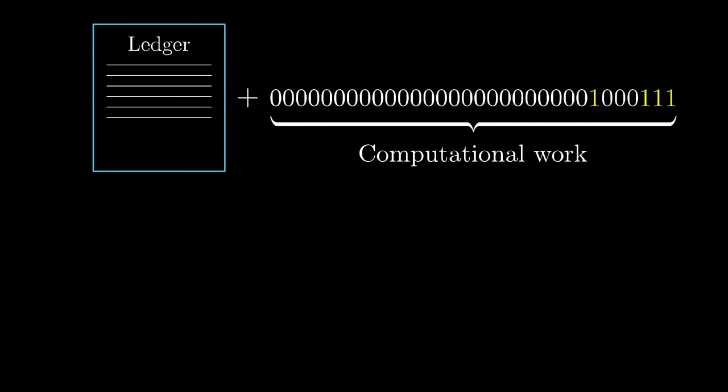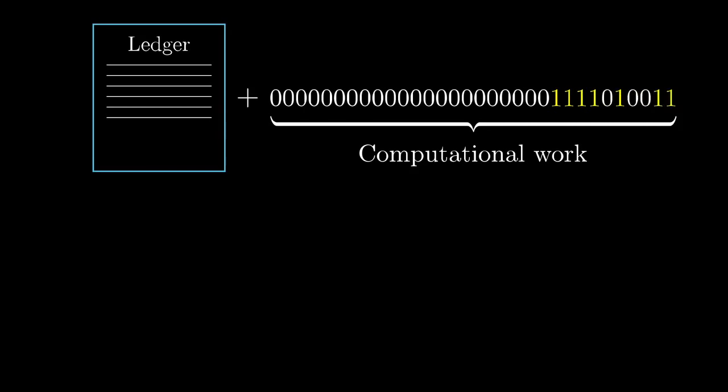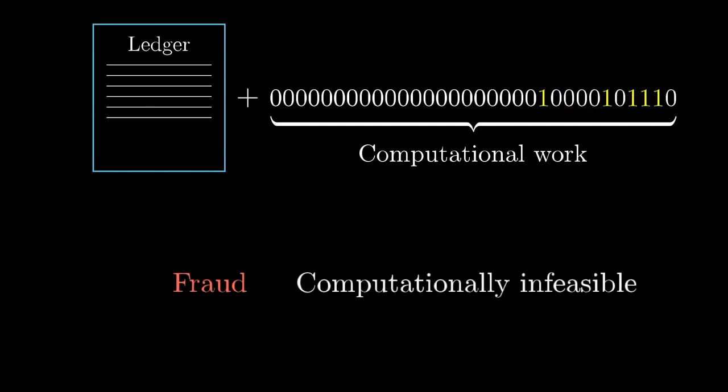At a high level, the solution that bitcoin offers is to trust whichever ledger has the most computational work put into it. I'll take a moment to explain exactly what that means. It involves this thing called a cryptographic hash function. The general idea that we'll build to is that if you use computational work as a basis for what to trust, you can make it so that fraudulent transactions and conflicting ledgers would require an infeasible amount of computation to bring about.